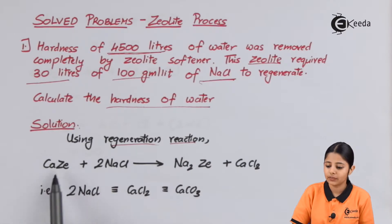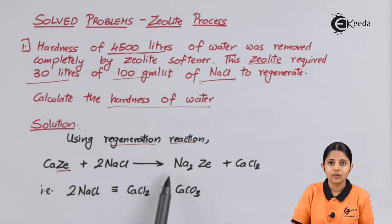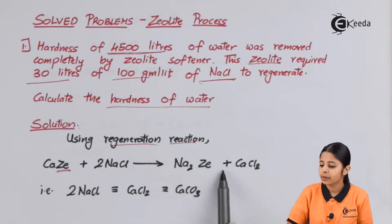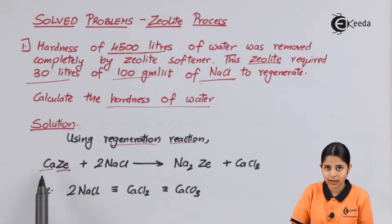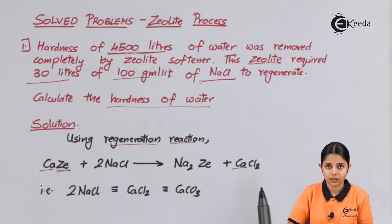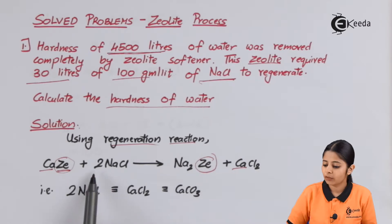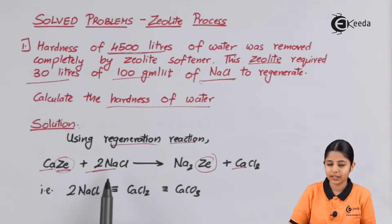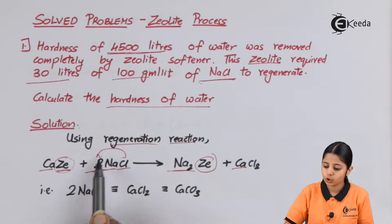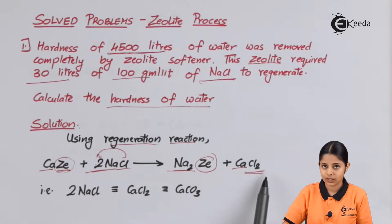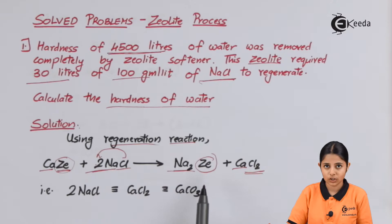The regeneration reaction is CaZe, where Ze stands for zeolite — that is calcium zeolite — plus 2NaCl, giving us Na₂Ze (sodium zeolite) plus CaCl₂. Let us check the balancing: 1 calcium on the reactant side, 1 calcium on the product side; 1 zeolite on each side; 2 NaCl gives 2 sodiums on the reactant side and Na₂ on the product side; 2 chlorines on each side. This regeneration reaction is balanced.